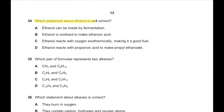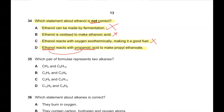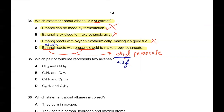Question number 34. Which statement about ethanol is not correct? Ethanol can be made by fermentation — correct, so this is not the answer. Ethanol is oxidized to make ethanoic acid — correct. Ethanol reacts with oxygen exothermically making it a good fuel — correct. Ethanol reacts with propanoic acid to make propyl ethanoate — the product should be ethyl propanoate, not propyl ethanoate. The alcohol group gives the alkyl part and the acid gives the '-ate' part: ethanol + propanoic acid → ethyl propanoate. So D is the correct answer.